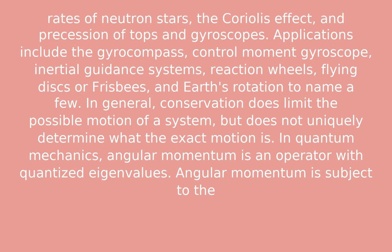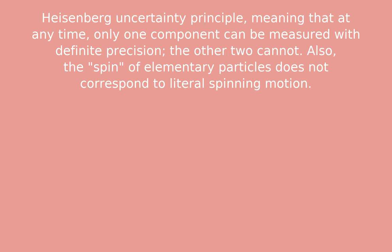In quantum mechanics, angular momentum is an operator with quantized eigenvalues. Angular momentum is subject to the Heisenberg Uncertainty principle, meaning that at any time, only one component can be measured with definite precision — the other two cannot. Also, the spin of elementary particles does not correspond to literal spinning motion.